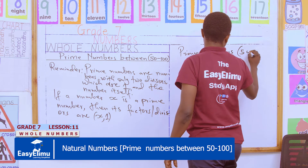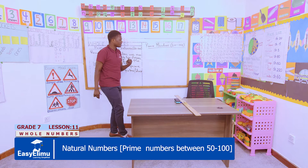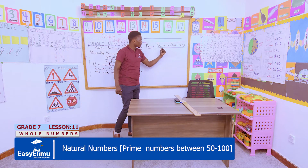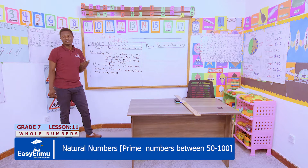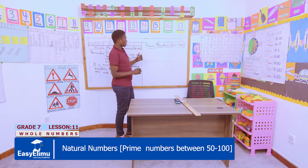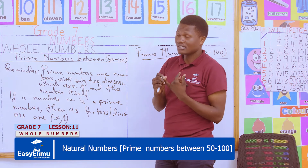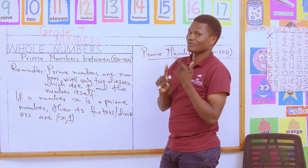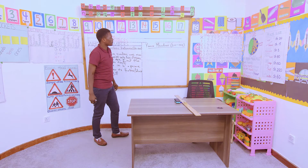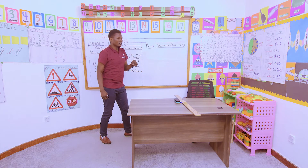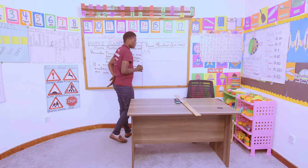Prime numbers between the interval 50 to 100. Let me see those who did the homework. So what was your first prime number between the interval 50 to 100? Someone says 51 — is that right, class? Not really, because 51 has three factors: three can actually divide 51 seventeen times, and we also have one and 51 itself. So what will be our first prime number? Yes, John — 53! So the first prime number between 50 to 100 is 53.